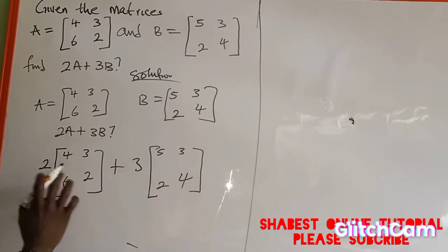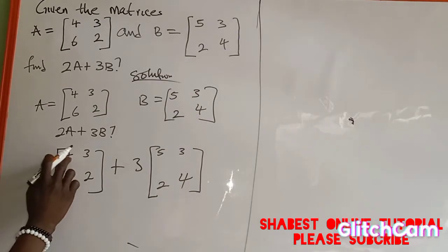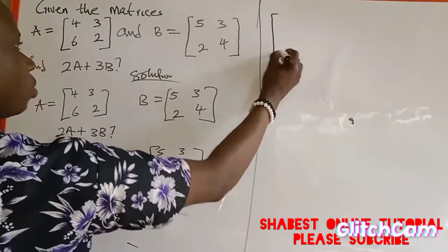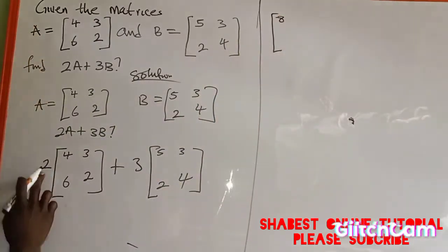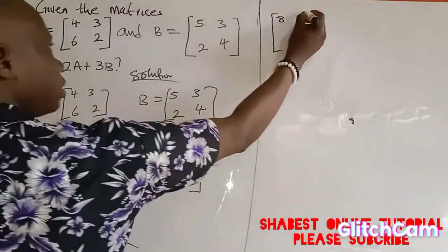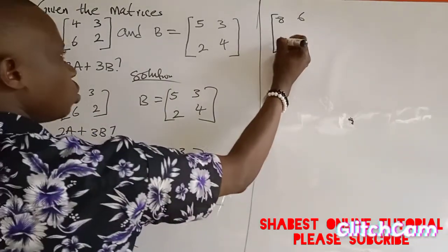I'll open the matrix: 2 multiplied by 4 is 8, this 2 multiplied by 3 is 6, 2 multiplied by 6 is 12, and 2 multiplied by 2 is 4. Then 3 multiplied by 5 is 15, 3 multiplied by 3 is 9, 3 multiplied by 2 is 6, and 3 multiplied by 4 is 12.